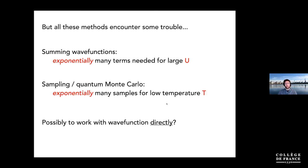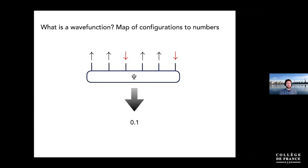This brings us back to why we want to deal with wave functions directly, because the most interesting physics happens with significant interactions at low temperature. We can't be stopped by an exponential wall. Maybe the key is to go back and try to handle the wave function directly, since that's the fundamental object in which the problem is formulated.